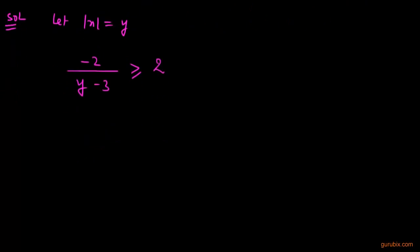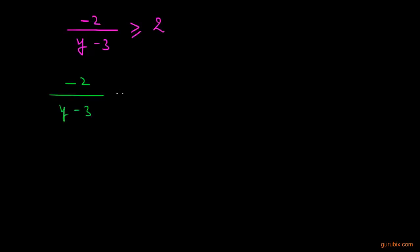We know that we can add or subtract the same number from both sides of inequality without changing the sign of inequality. We shall subtract 2 from both sides, then it will be -2/(y - 3) - 2 greater than or equals to 2 - 2.